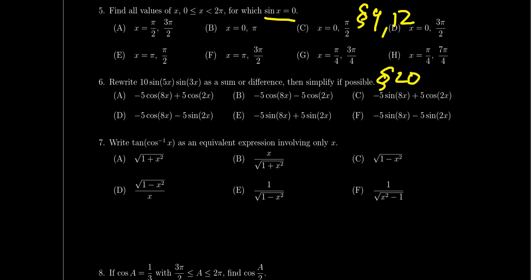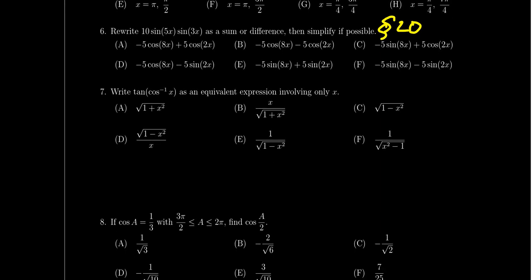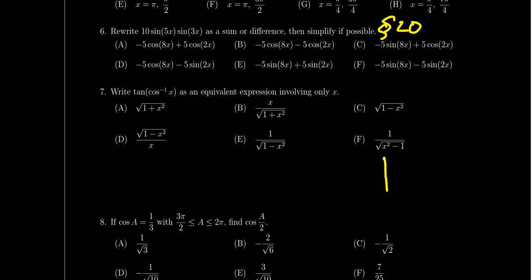Question 7 asks you to compute the trigonometric ratio of an angle defined using an inverse trig function — for example, tangent of cosine⁻¹(x), where x is left as a variable. Treat the ratio as x over 1, then draw a right triangle diagram, label the sides, call the inverse function theta, and compute the desired ratio from the triangle. This topic was covered in lecture 14 on trigonometric inverses.